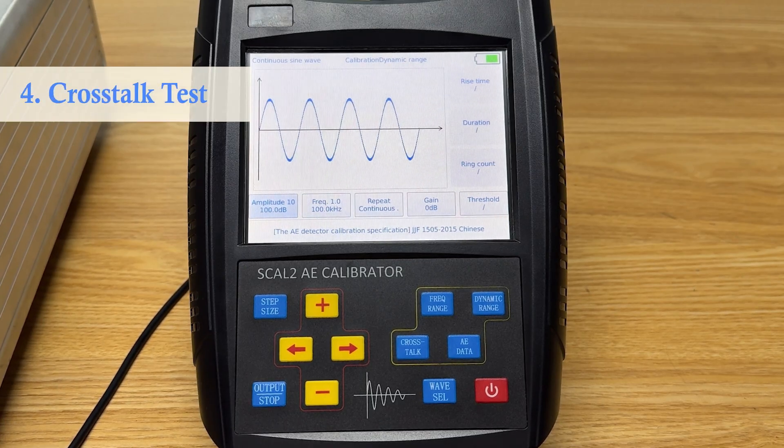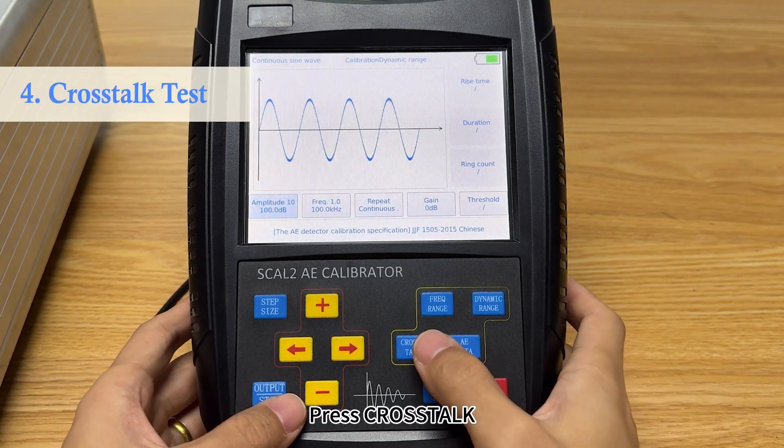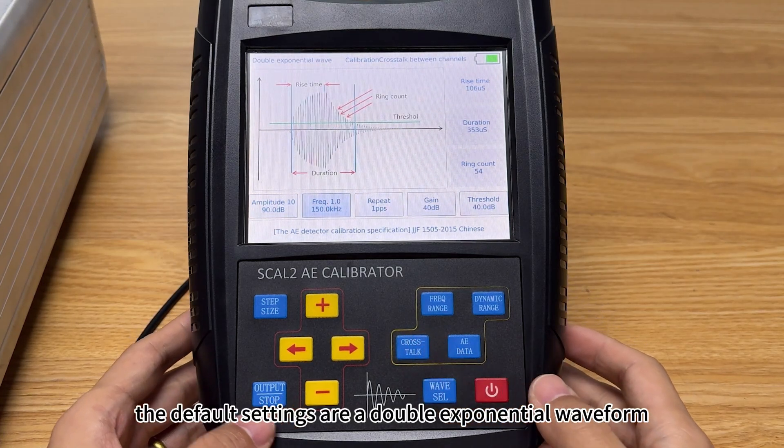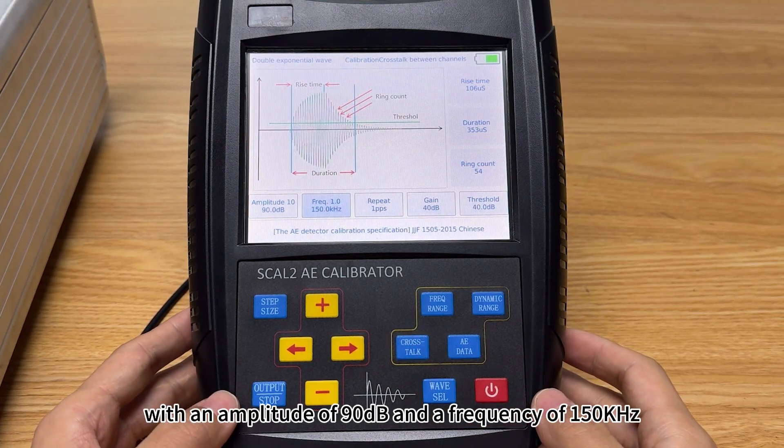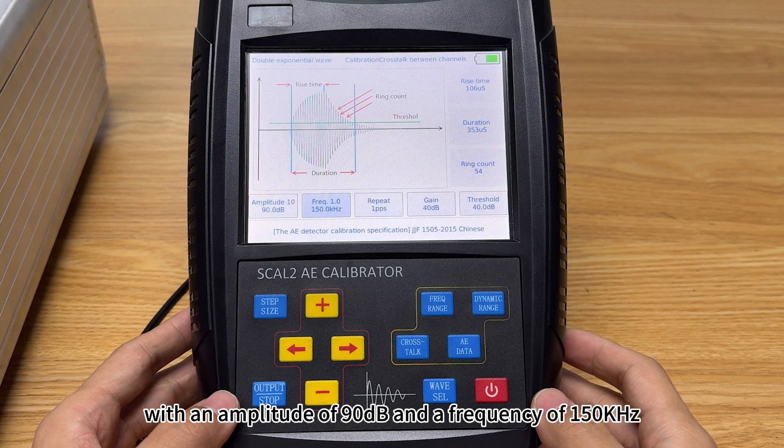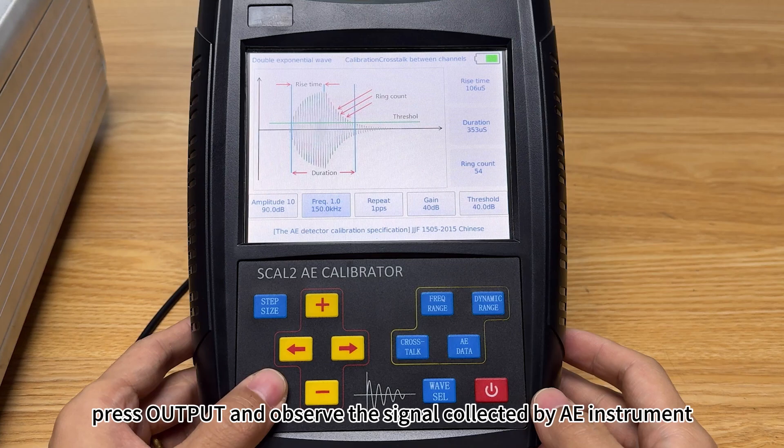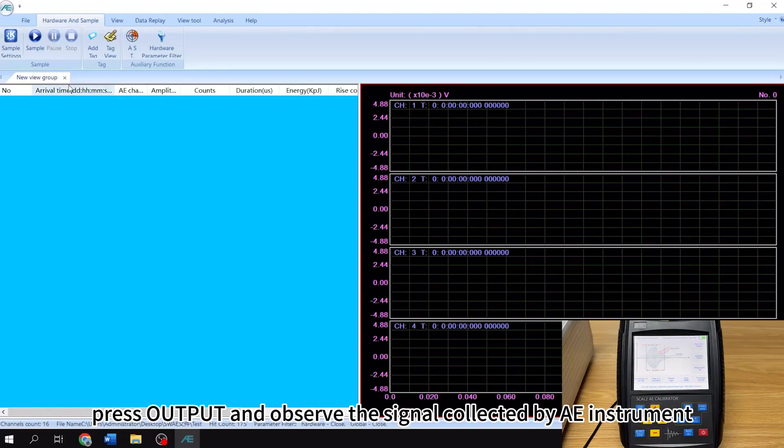Crosstalk Test. Press Crosstalk. The default settings are a double exponential waveform with an amplitude of 90 dB and a frequency of 150 kHz. Press output and observe the signal collected by AE instrument.